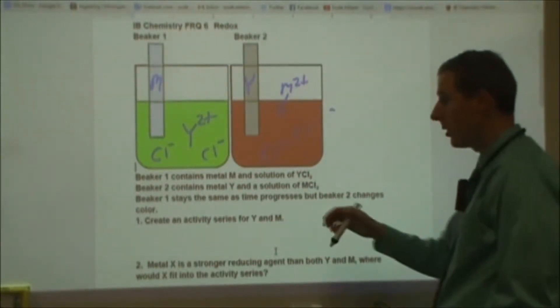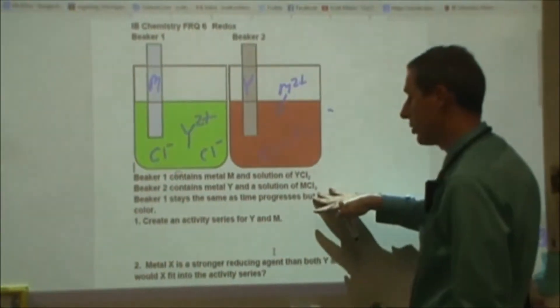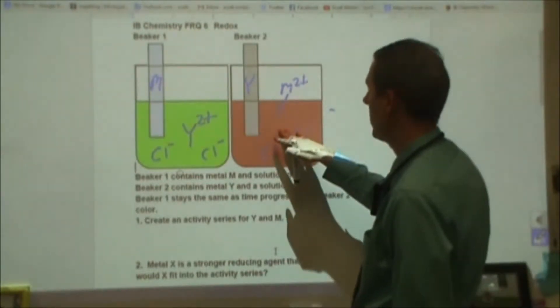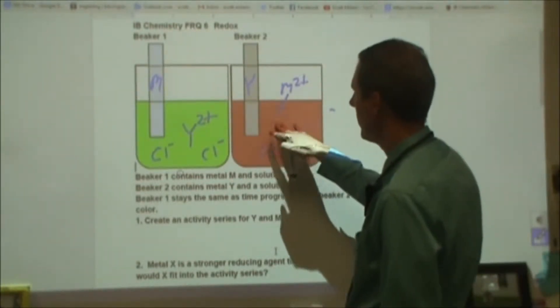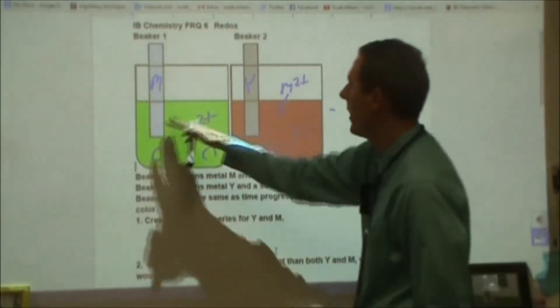Beaker 1 stays the same as time progresses, so it stays green, this metal stays the same, but then in beaker 2 it changes color, so this is going to change from red to green, this is going to start to deteriorate and we're going to form this other metal M on top of here.